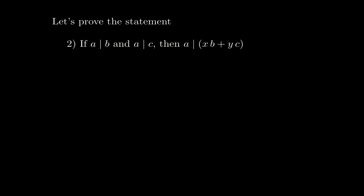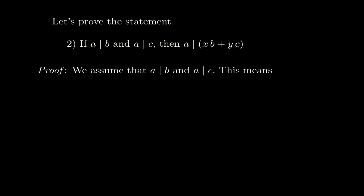Now I'm going to prove the second statement. We have: if a divides b and a divides c, then a divides any linear combination xb plus yc. The way these proofs work is that you always go back to the definition of divisibility. Since this is an if-then statement, we assume a divides b and a divides c, and from that assumption we will prove that a divides xb plus yc.